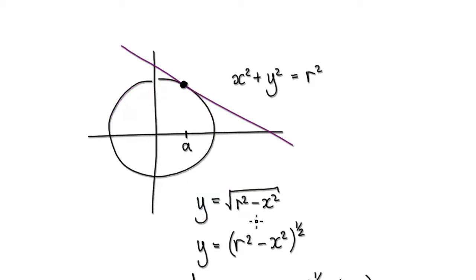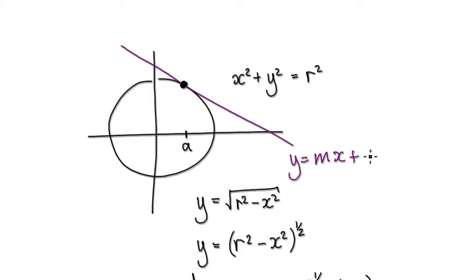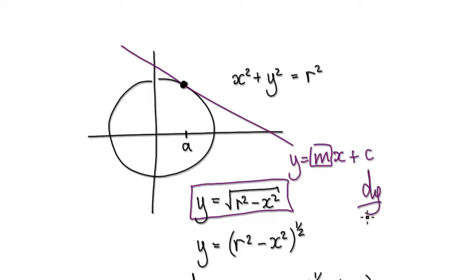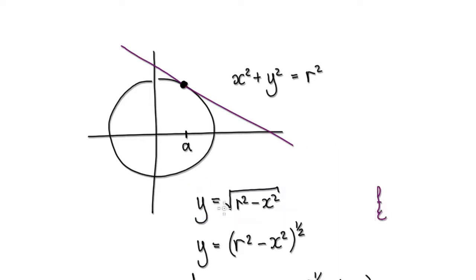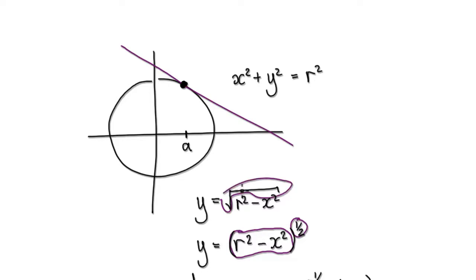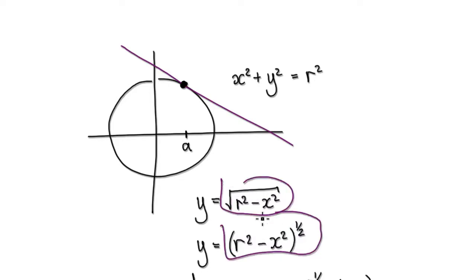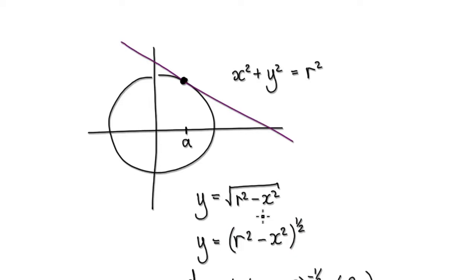If we are trying to come up with the equation of this tangent line, it is going to be of the form y equals mx plus c. We need to work out the gradient. To work out the gradient, we need to differentiate this — we need to find dy by dx. To differentiate this, imagine the square root as being a bubble to the power of a half, because to the power of a half is the square root. So imagine this as being that, and now we can use the chain rule to differentiate it.